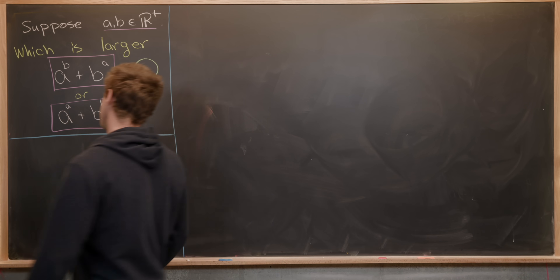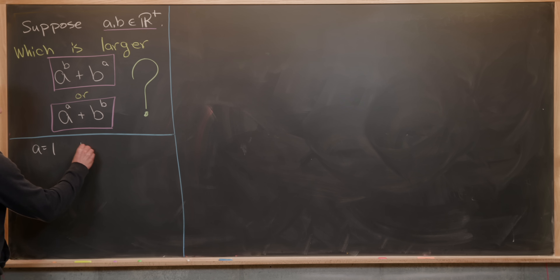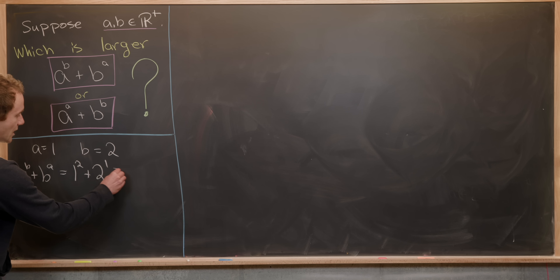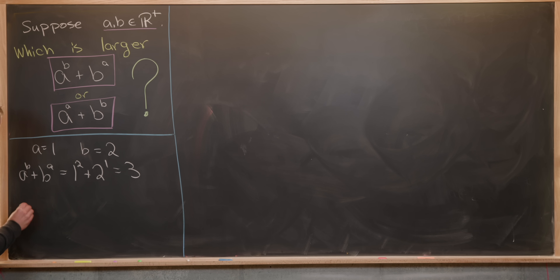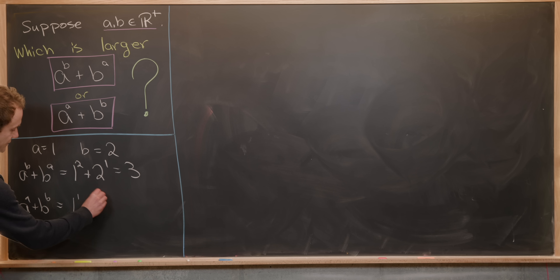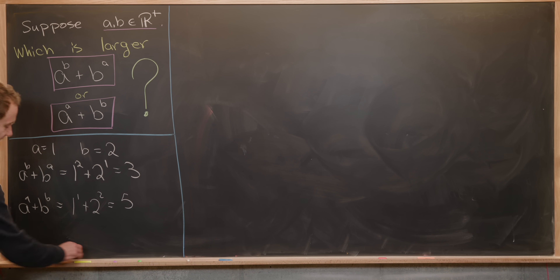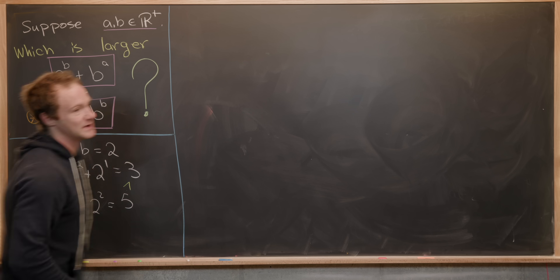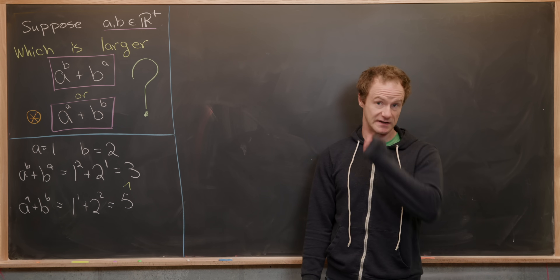Let's take A equal to one and B equal to two and see what we get. A to the B plus B to the A is one squared plus two to the one, which is three. But A to the A plus B to the B is one to the one plus two to the two, which is five. Clearly five is bigger than three.